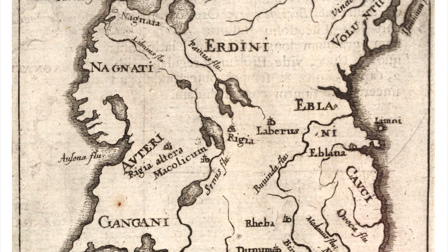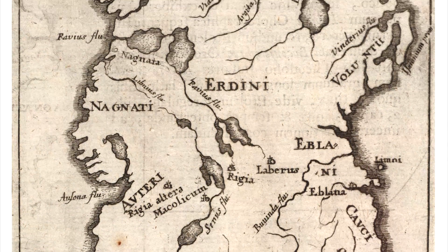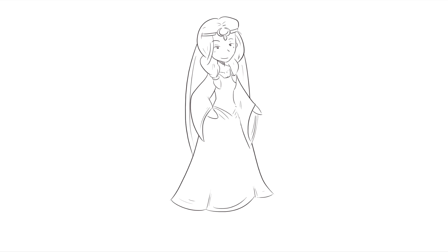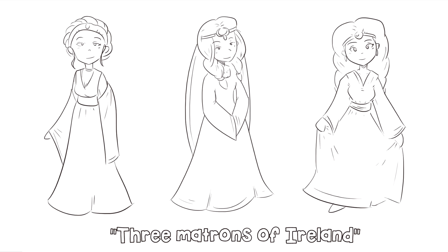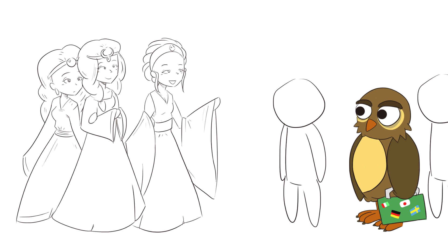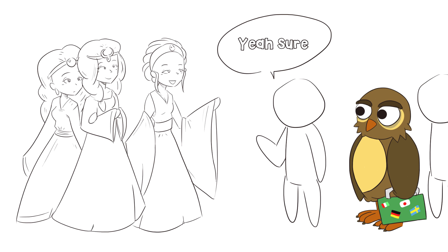Well, our journey begins in ancient Ireland with the name of a Gaelic goddess. Her name was Ériu and she was one of three sisters who were the three matrons of Ireland. In Irish mythology, when the original Irish settlers first landed on the island, the three sisters asked that their names be given to the land. And the people were like, sure, why not?